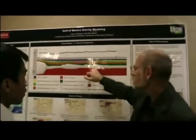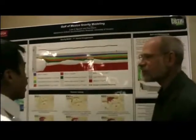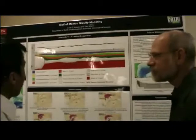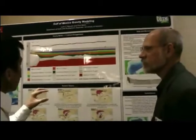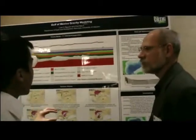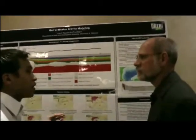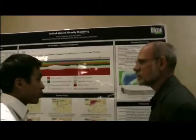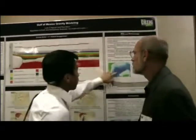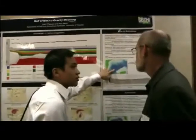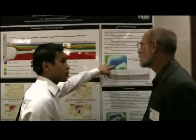Otherwise, you wouldn't be able to divide it. In the refraction data, they have two layers of different crust, and there are three layers here because of the interception with their velocity model.